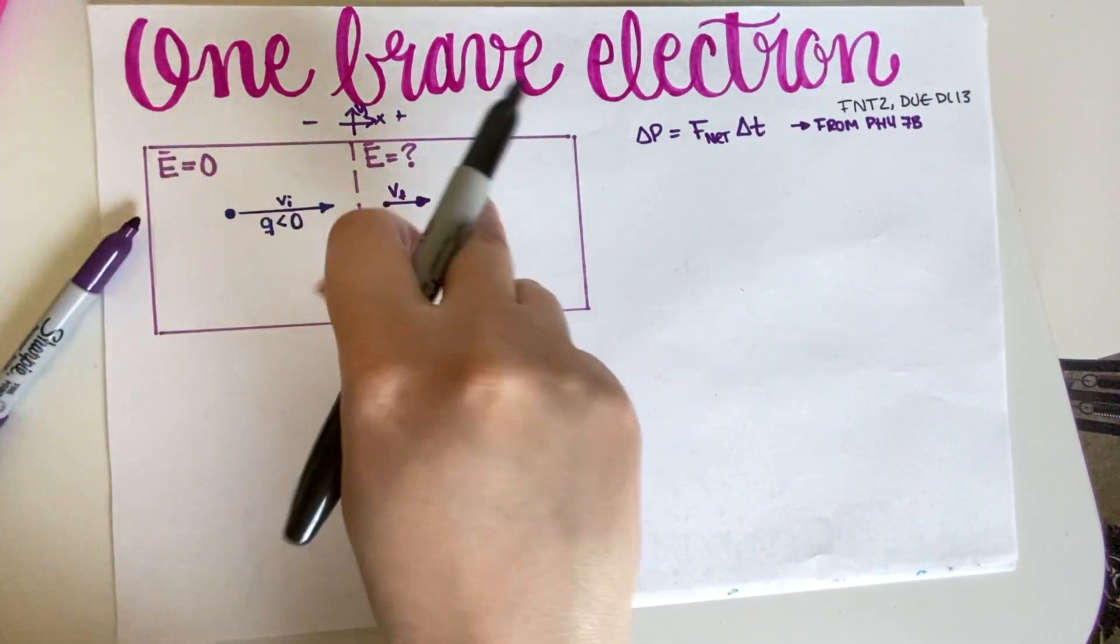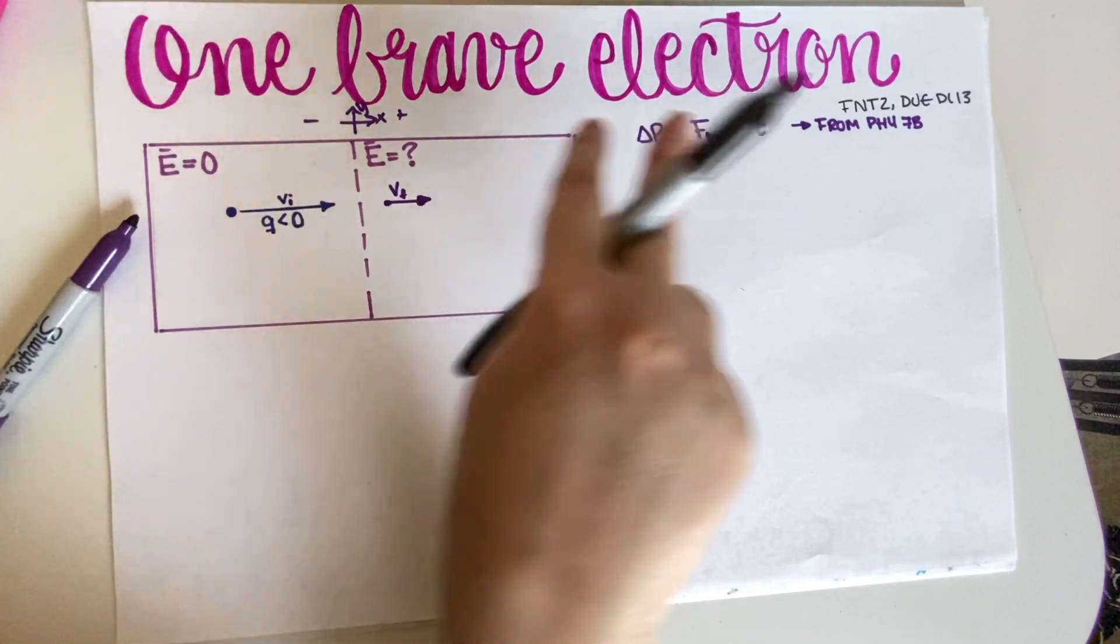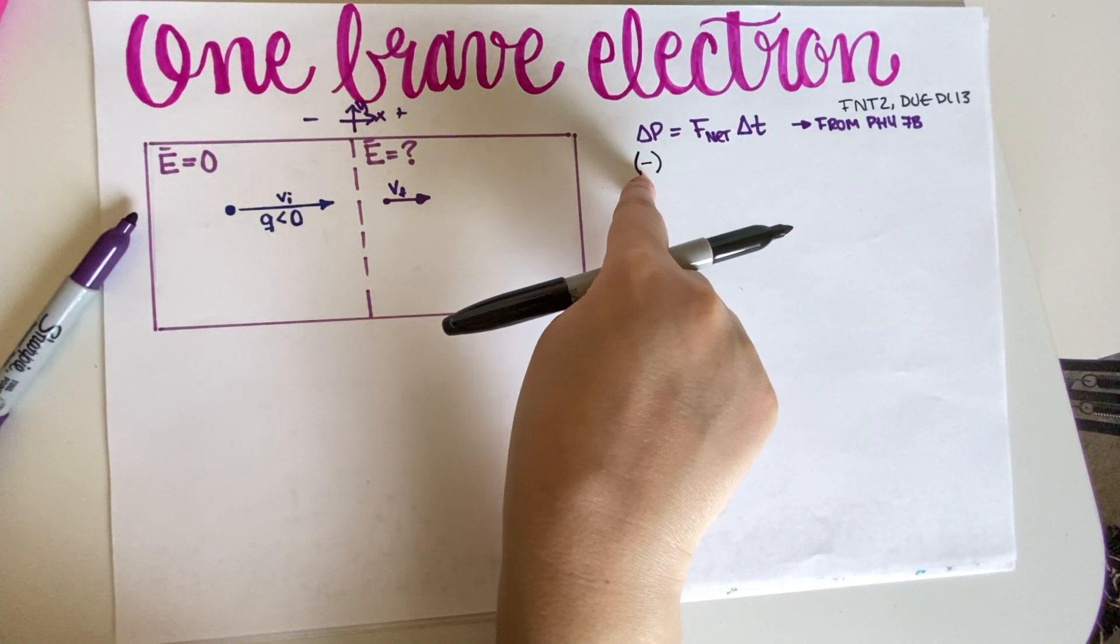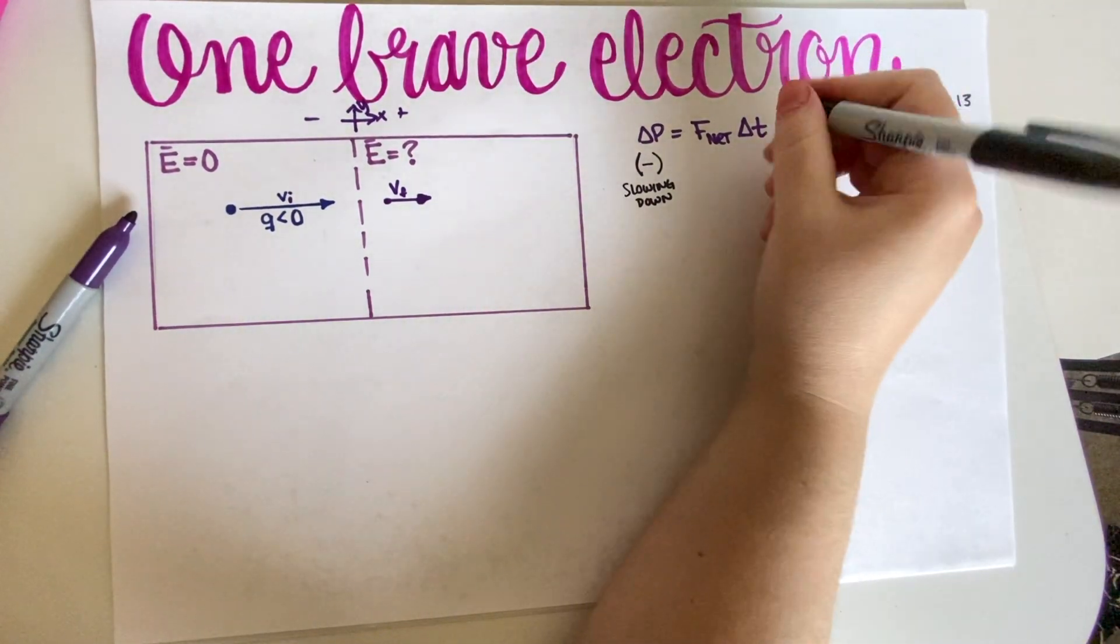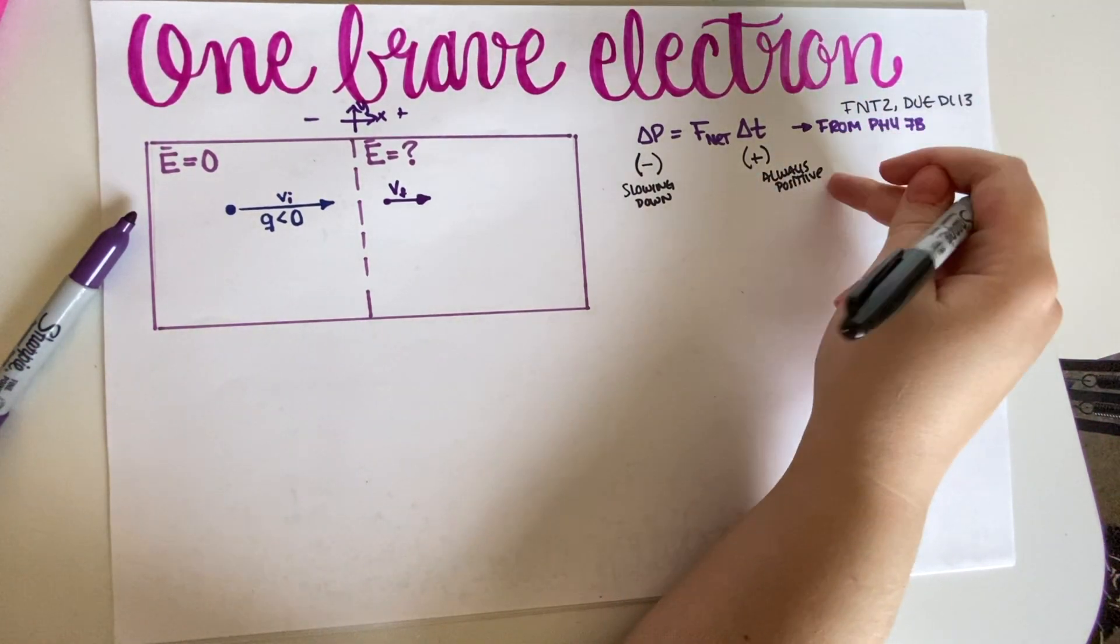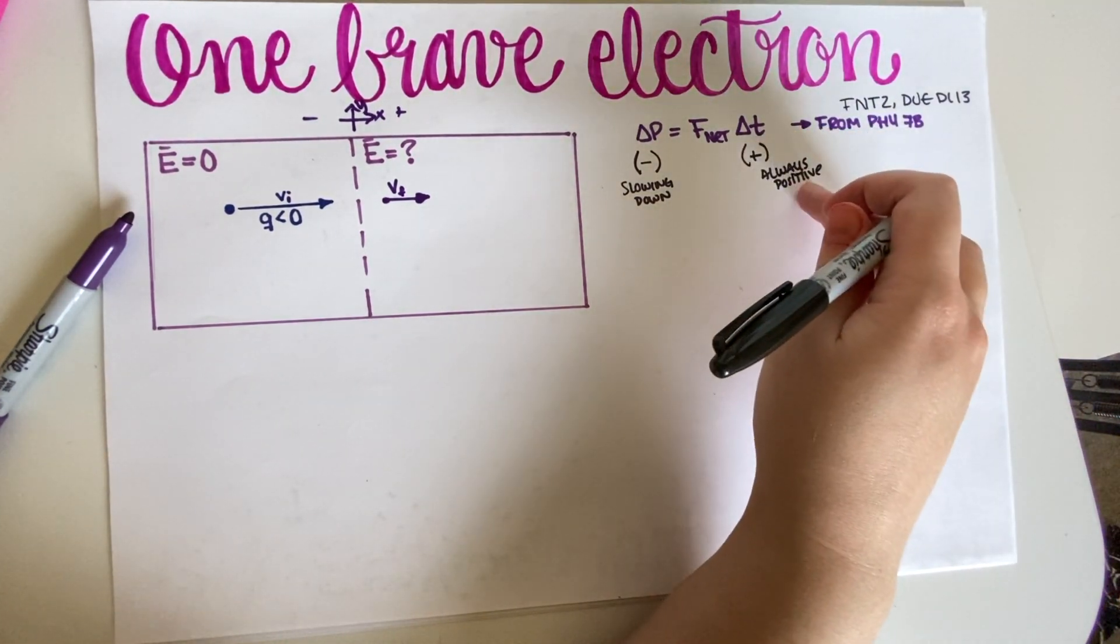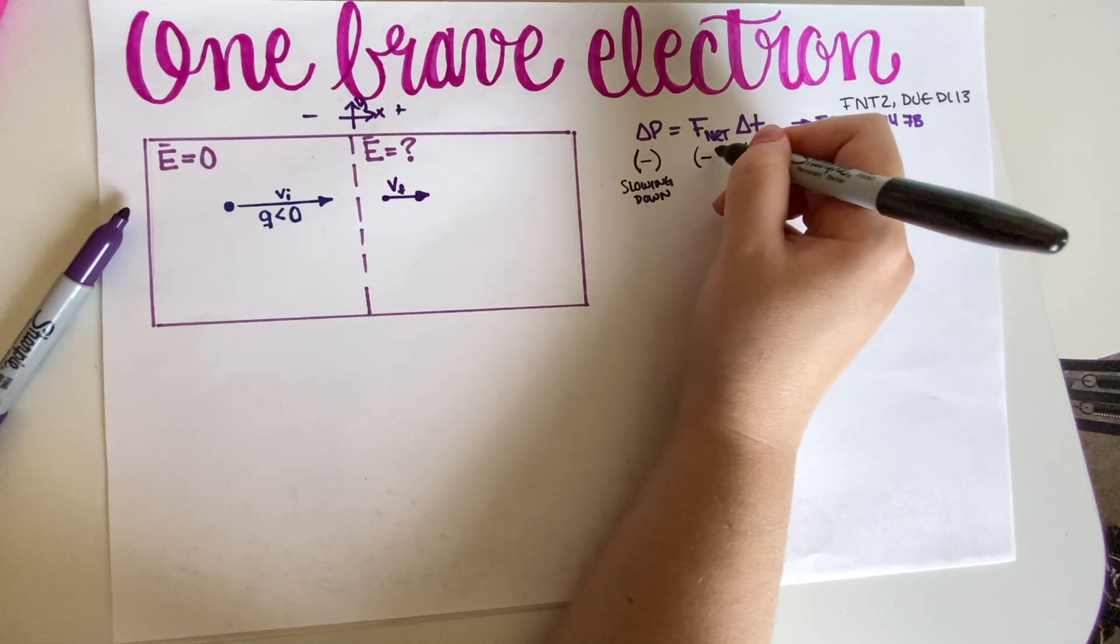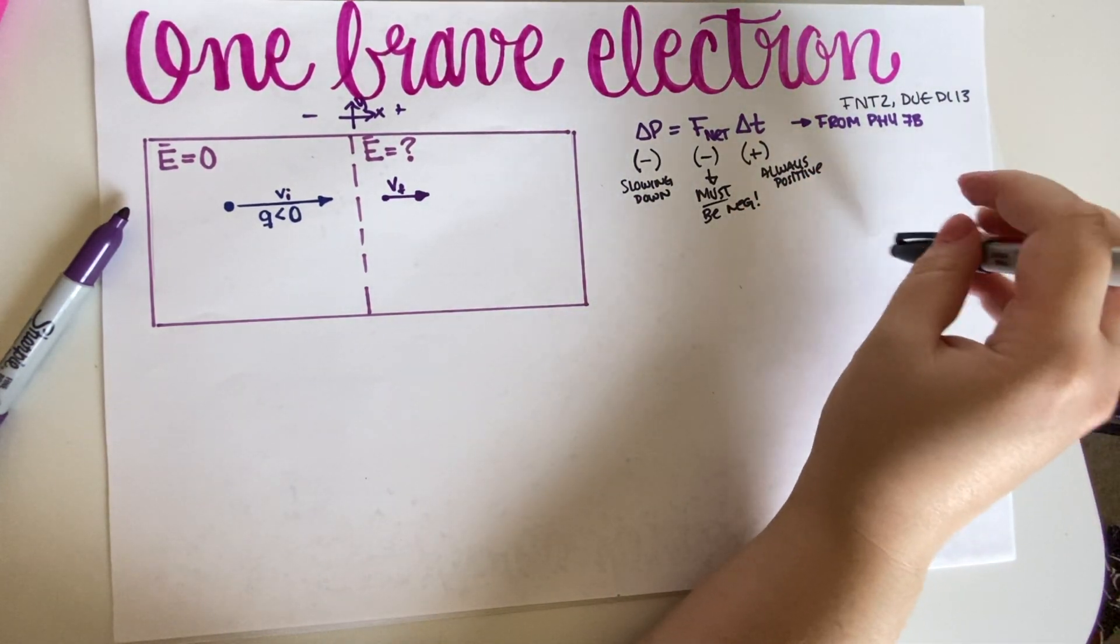So this is from physics 7b. Now, in this case, delta P, we have a particle that is slowing down. It had a certain velocity and then it's slowing down, which means that its momentum, its delta P, is going to be negative. Delta T is always positive because it's a change in time, and time doesn't really go negative on the 7 series. So in order for this number on the left side of the equation to be a negative number, then that means that the net force must be negative.